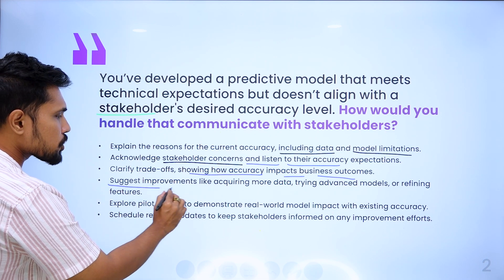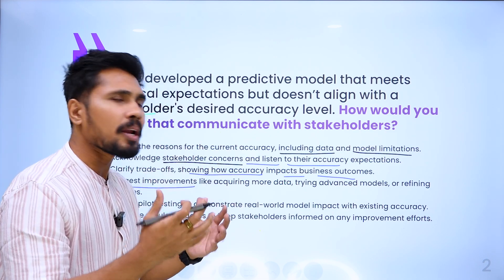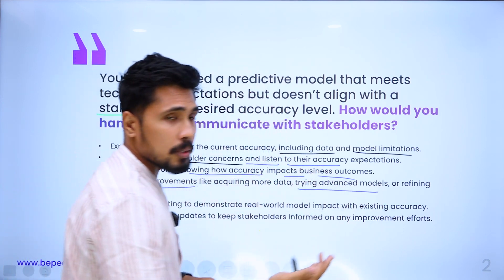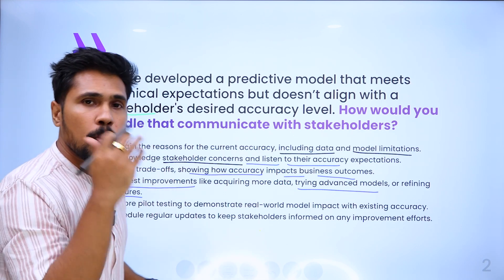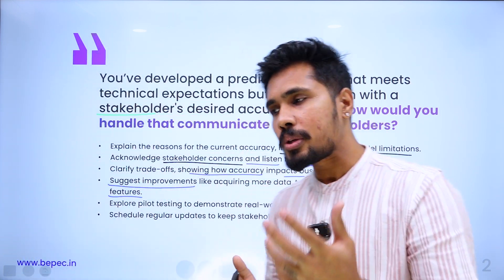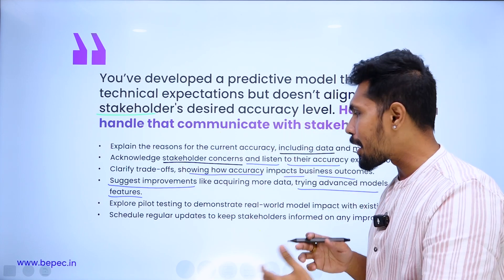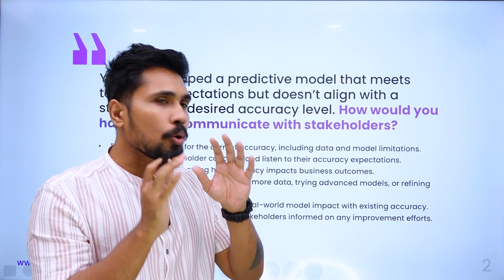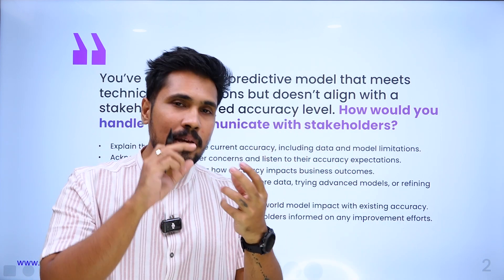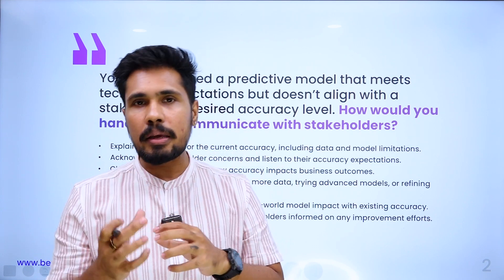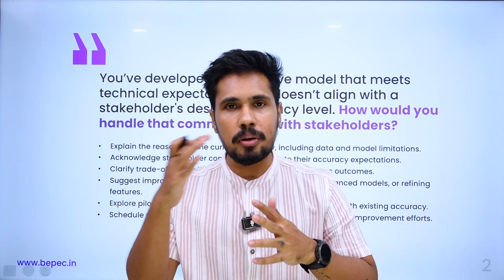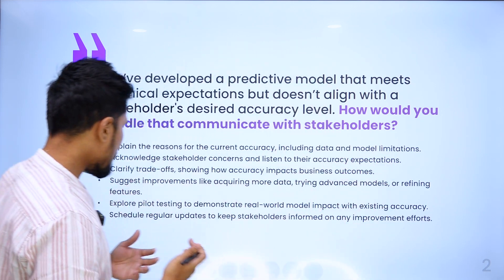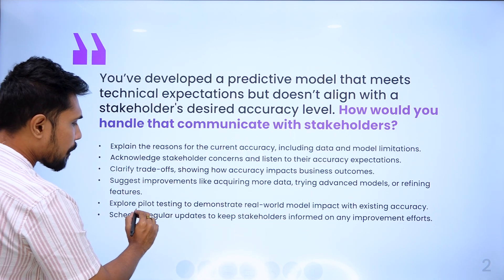Provide suggestions for improvements, such as acquiring more data, going with advanced models, or refining features using a better feature selection technique. Accuracy is dependent on three things: the data or sample rows, the model — whether ML or DL, including stochastic, probabilistic, deterministic, discriminative, or generative categories — and the features. Provide those suggestions and then explore a pilot test.